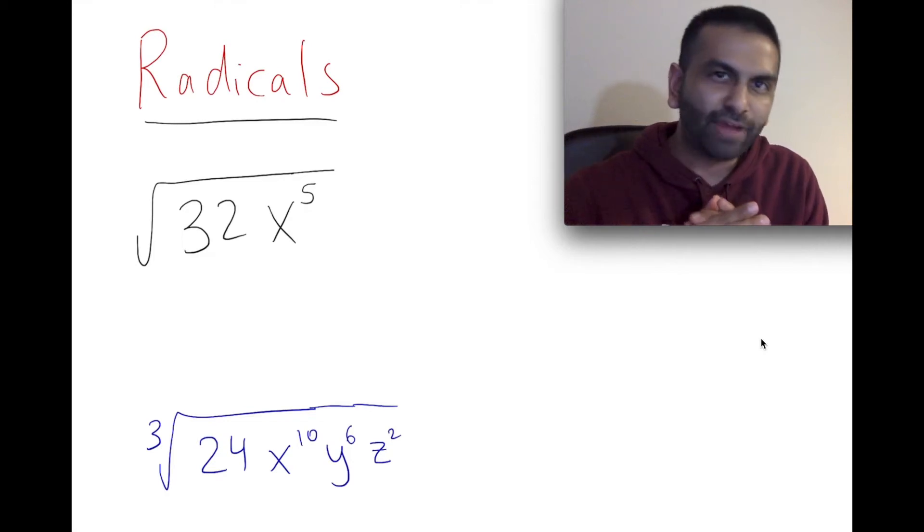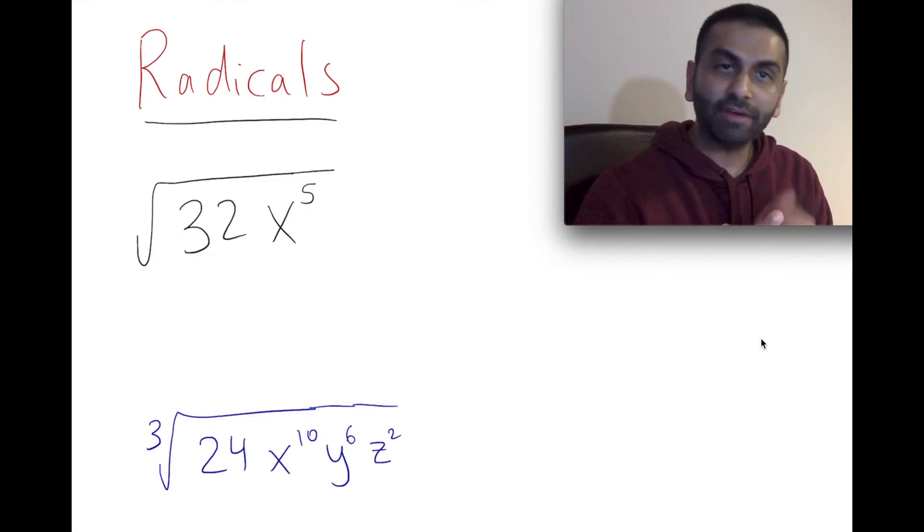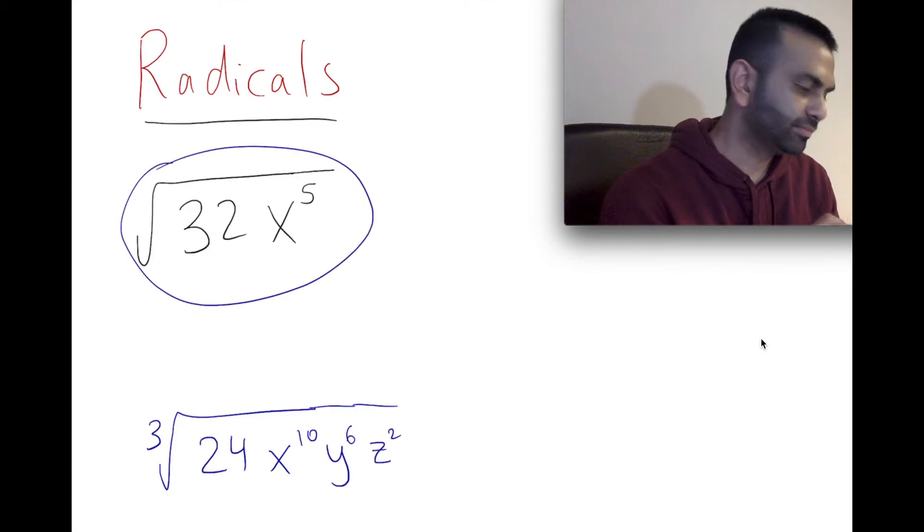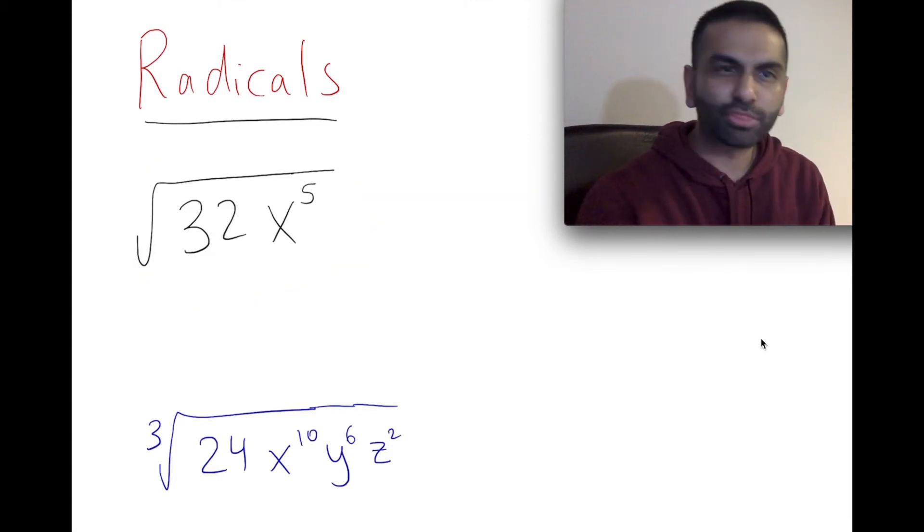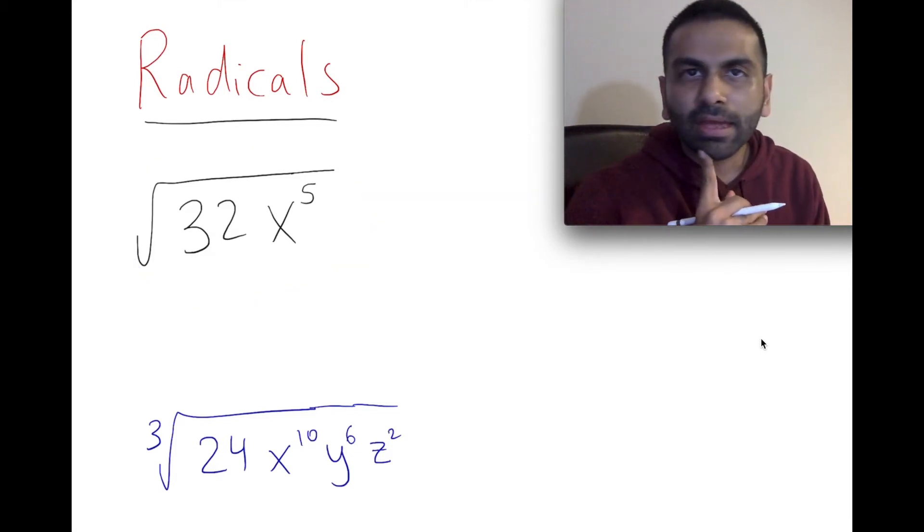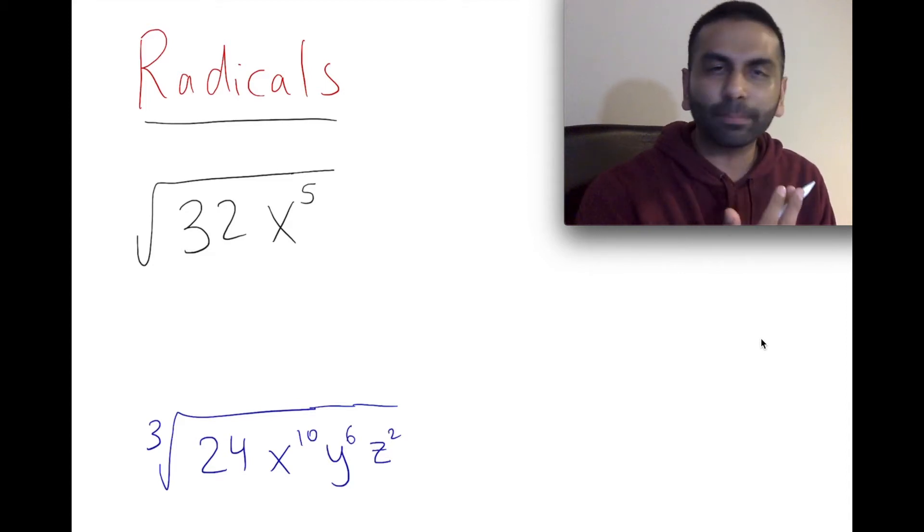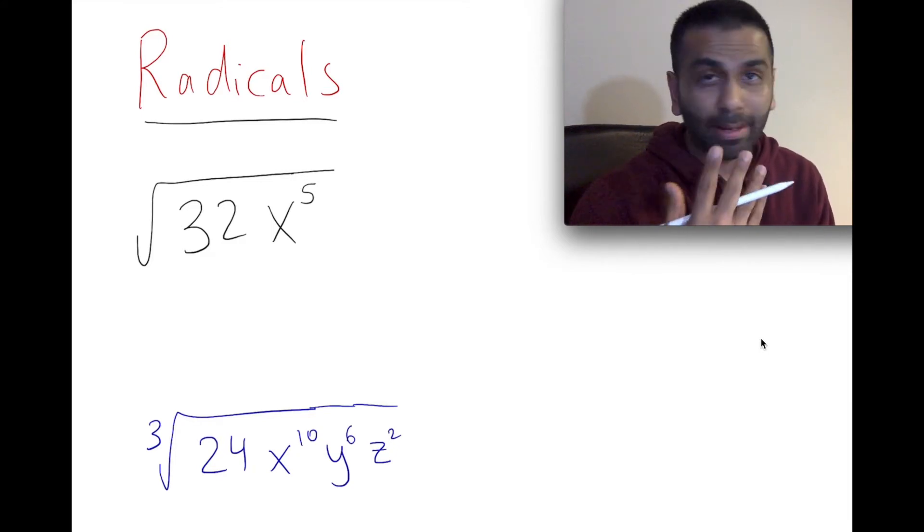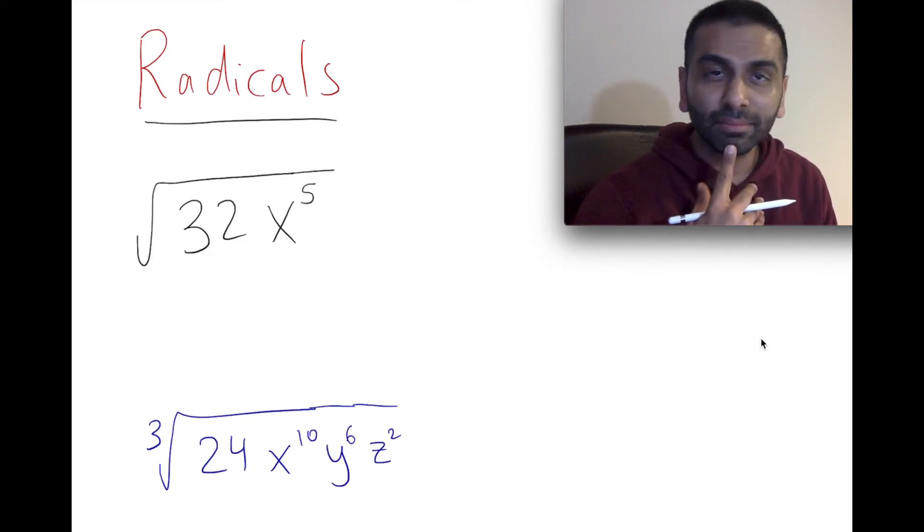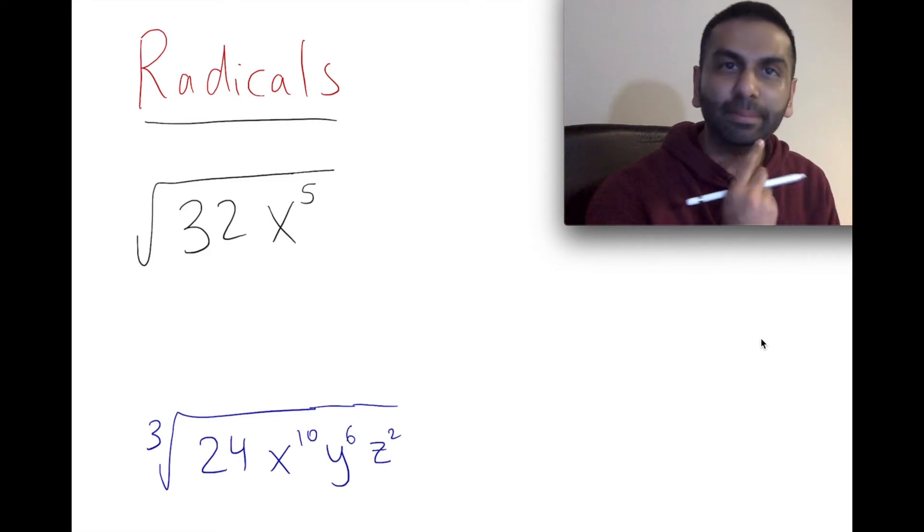Now let's talk about how to simplify radicals. If you have this expression, for example, the radical of 32x to the fifth, and let's say you're doing a problem and you get that as your answer and you look at the correct answer and it looks a little bit different, that doesn't necessarily mean you're wrong because they might have just simplified it a bit further.